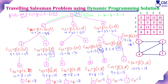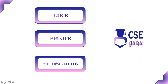This is the traveling salesman problem using dynamic programming — a simple method using a state-space tree. This approach is very easy and clear to understand pictorially compared to the previous tabulation method. However, in exams you must implement the tabulation method; this state-space tree is for understanding. Thank you for watching.